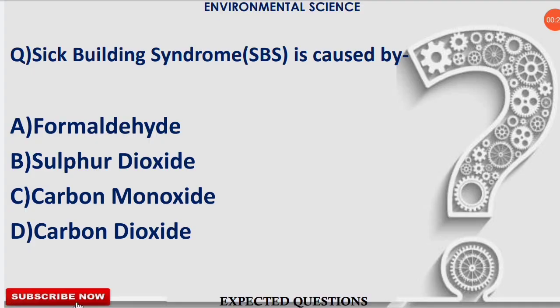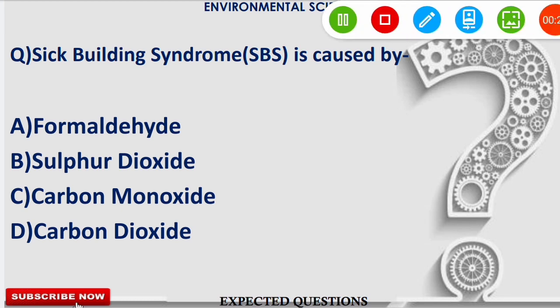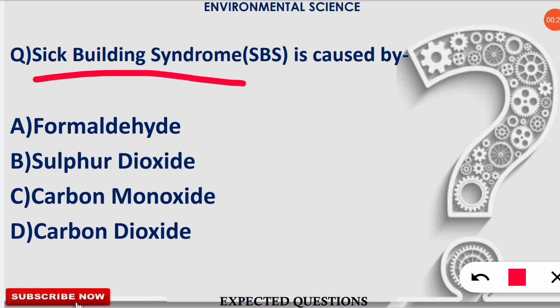We will start with the first question: Sick Building Syndrome is caused by which of the following air pollutants? For some students this will be a new term, but SBS — Sick Building Syndrome — is caused by formaldehyde. SBS is a medical condition in which people suffer from symptoms of illness or feel unwell for no apparent reason, and formaldehyde is the indoor pollutant responsible.